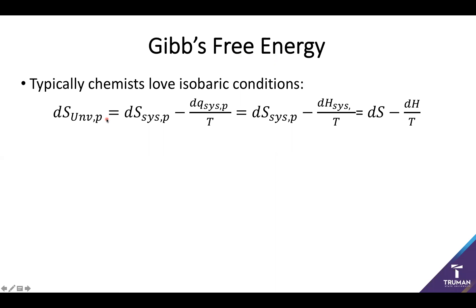We often as chemists love ourselves some isobaric conditions because most of the time we're working at about a constant 1 atm. This can essentially be accomplished by taking our system of looking at the change in entropy of the system and the change in heat of the system under isobaric conditions, which is the same thing as the change in enthalpy.